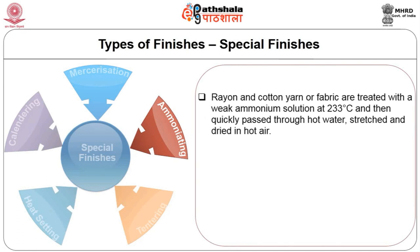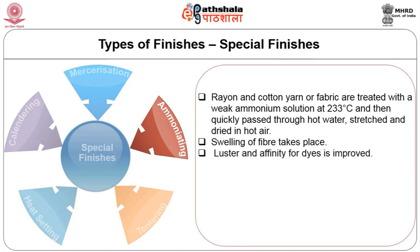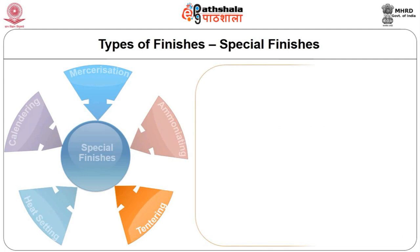Ammoniating: rayon and cotton yarn or fabric are treated with a weak ammonium solution at 233 degrees centigrade and then quickly passed through hot water, stretched and dried in hot air. Swelling of the fiber takes place; lustre and affinity for dyes is improved.